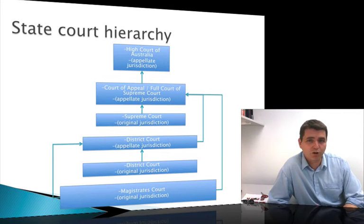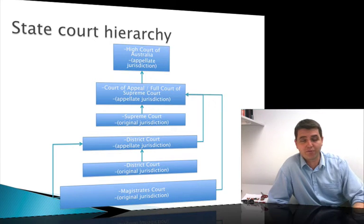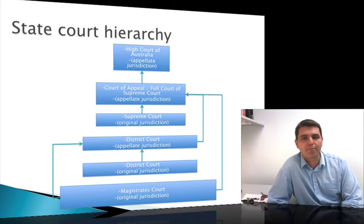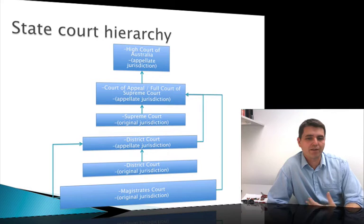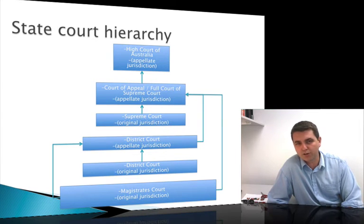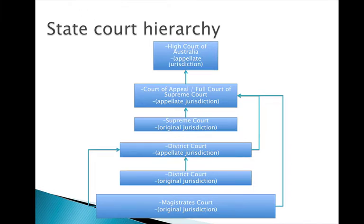The state hierarchies are somewhat more complex — more layered and tiered than what we find in the federal sphere — reflecting the breadth of topics dealt with at the state level. At the bottom we have the Magistrates Court, which is the entry level. Above that is the District Court, with both original and appellate jurisdiction. Then we have the Supreme Court, with both an original jurisdiction and the Court of Appeal or Full Court of the Supreme Court, which can hear appeals.